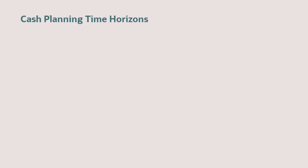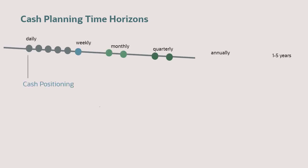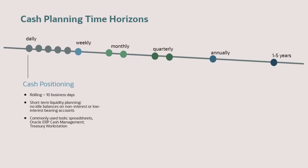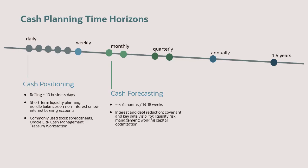Cash planning is done for different time horizons. Short-term cash positioning is done daily for a rolling 5 to 10 days. Typically, spreadsheets, Oracle ERP Cash Management, or Treasury Workstation are used for this. For cash forecasting, the focus is on a 3 to 6-month or 13-week period to cover medium-term cash forecasting, and this is mostly done in spreadsheets.